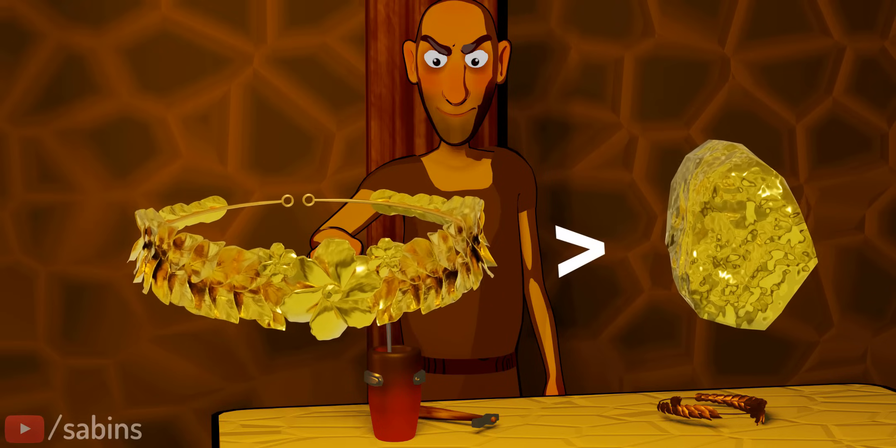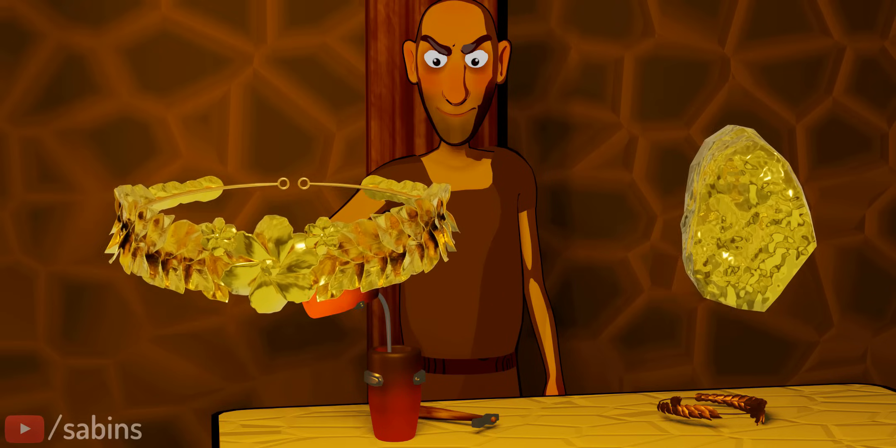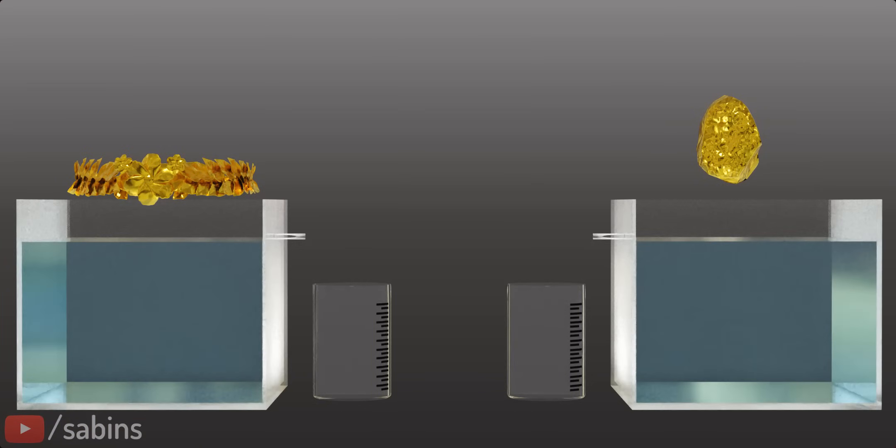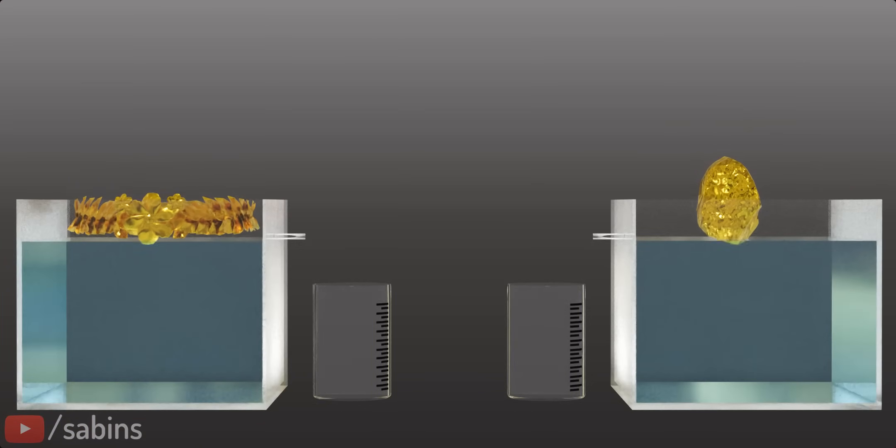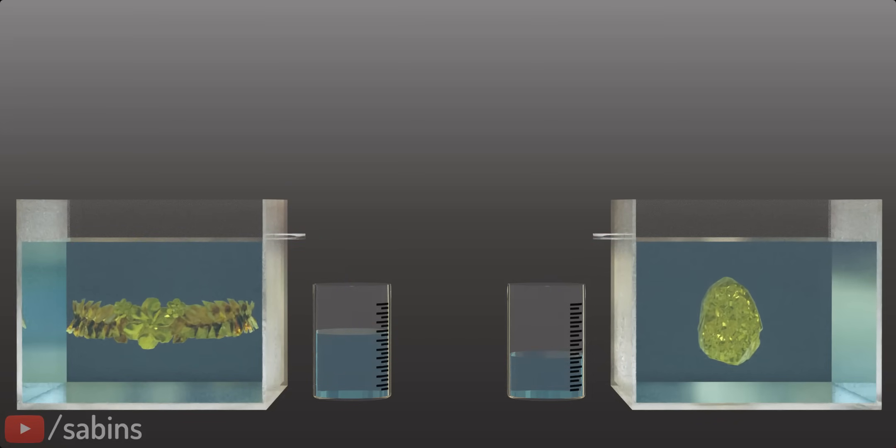Many people believe that Archimedes checked the purity difference by finding out this volume difference. They maintain that all he would have to do was immerse both the crown and a lump of pure gold in buckets full of water. If the bucket with the crown displaced more water, the crown would be impure.